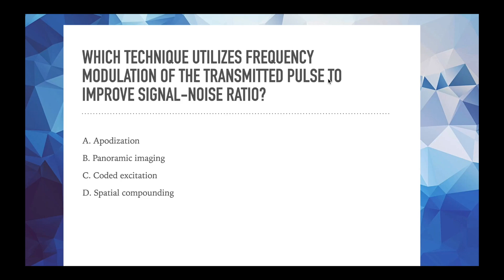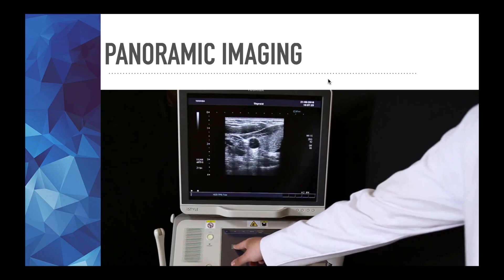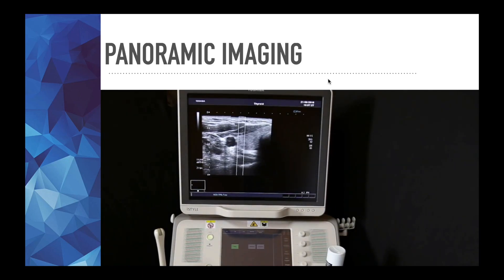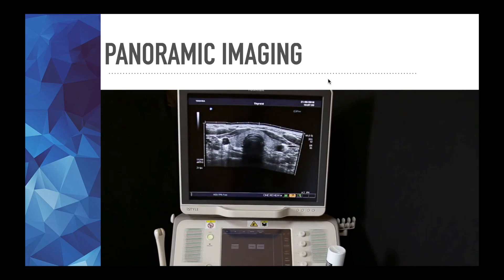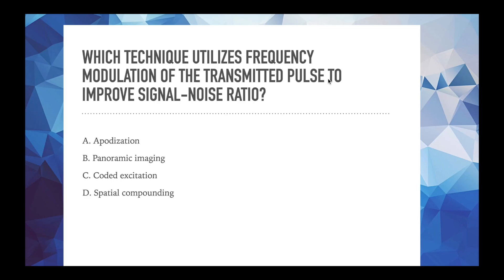The first one let's just eliminate would be B panoramic imaging. That is a way to image a large structure with the small face of our transducer. So I'm going to show you a video of what that looks like. So as you can see the machine there, he starts the panoramic image and then he sweeps the probe and it paints a live image and creates one long image from that one single instance. So this is the whole neck with the complete thyroid and we use panoramic imaging for just something that's longer than the face of the transducer. So we know that it's not panoramic imaging.